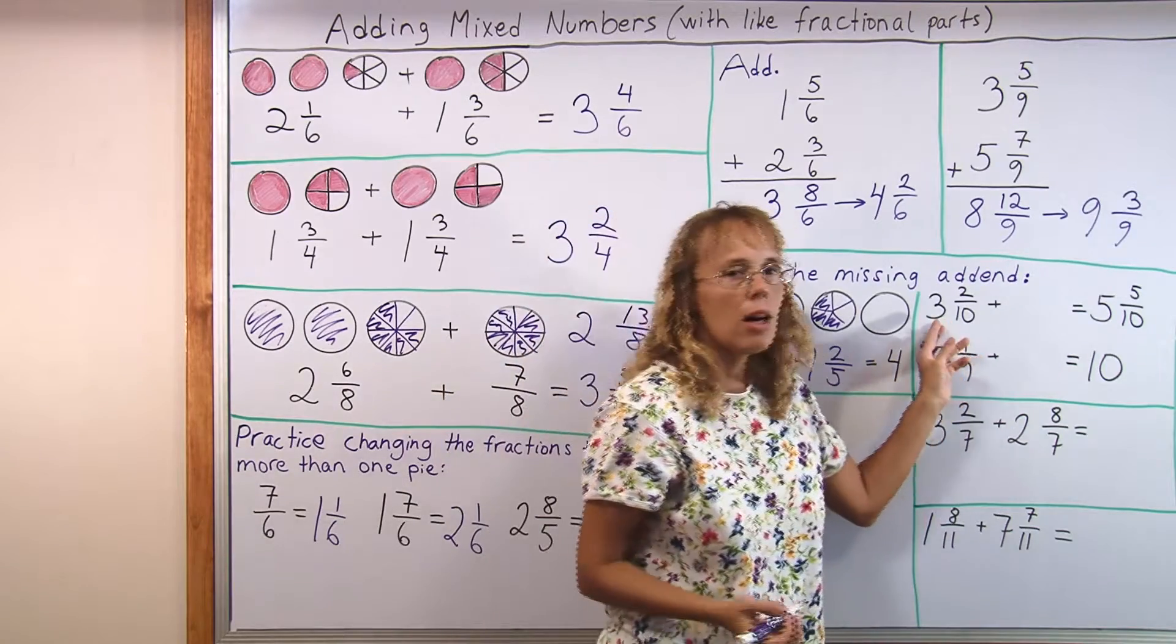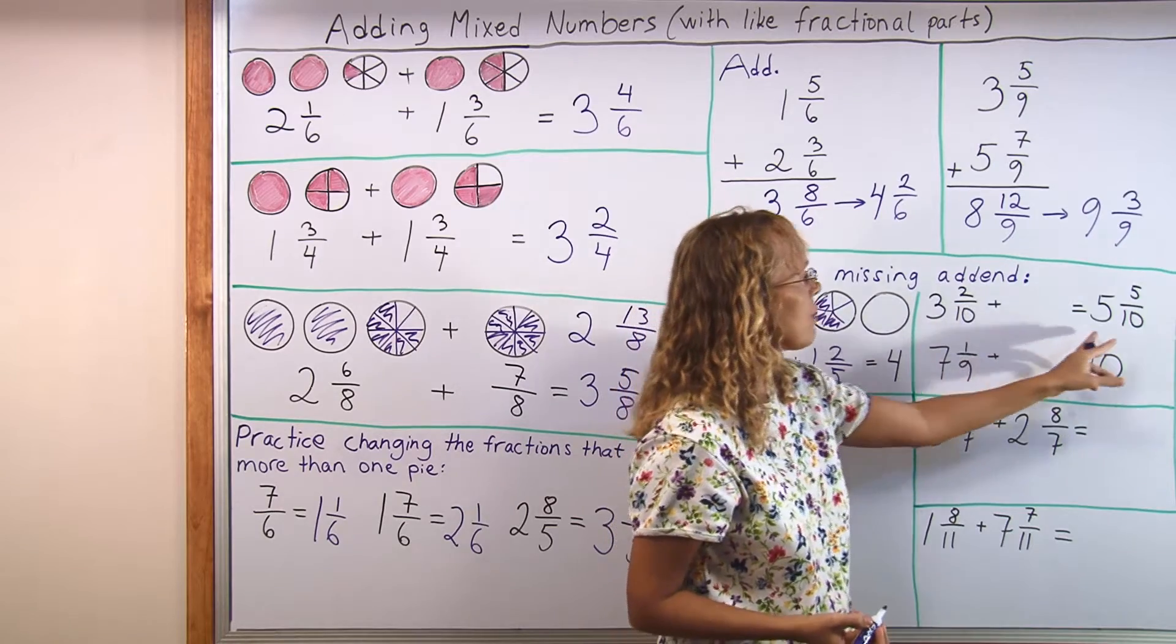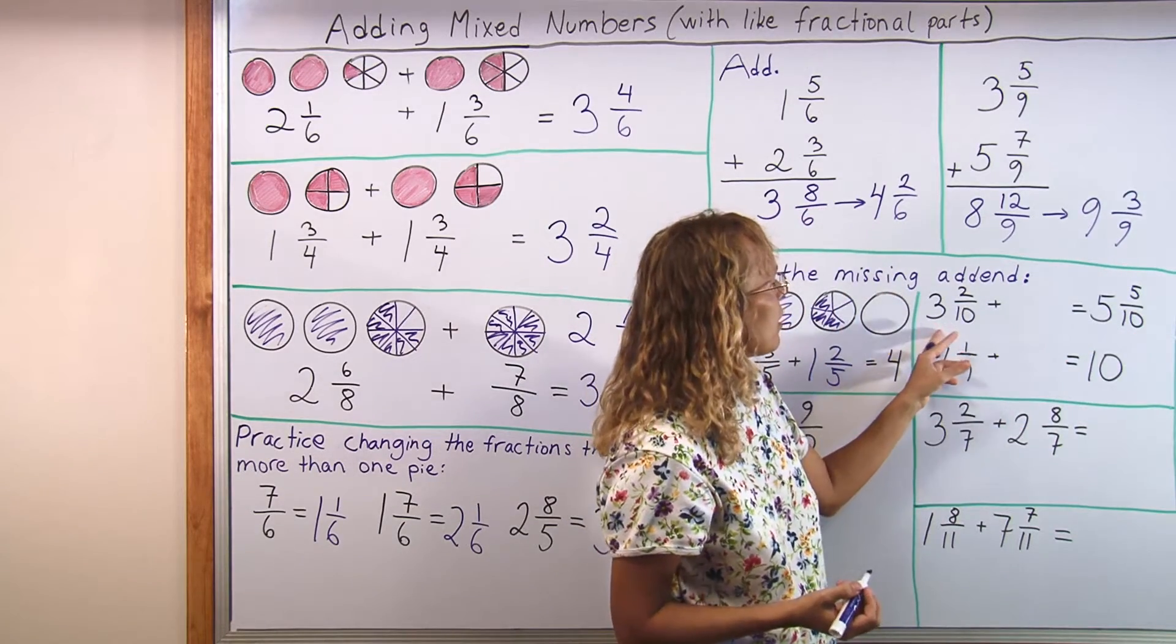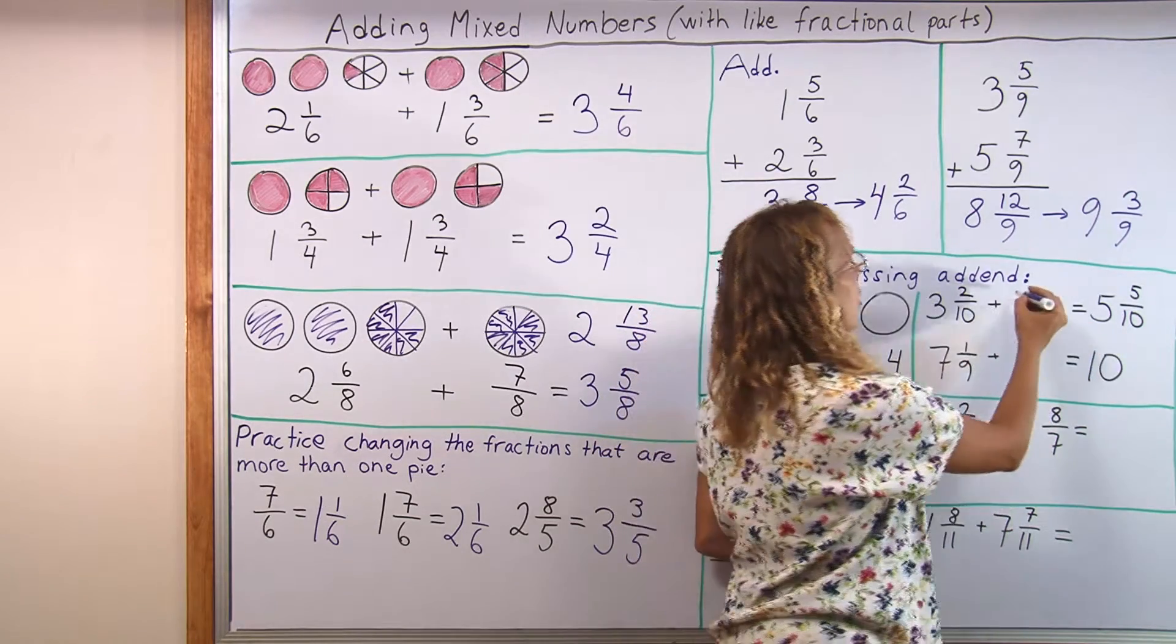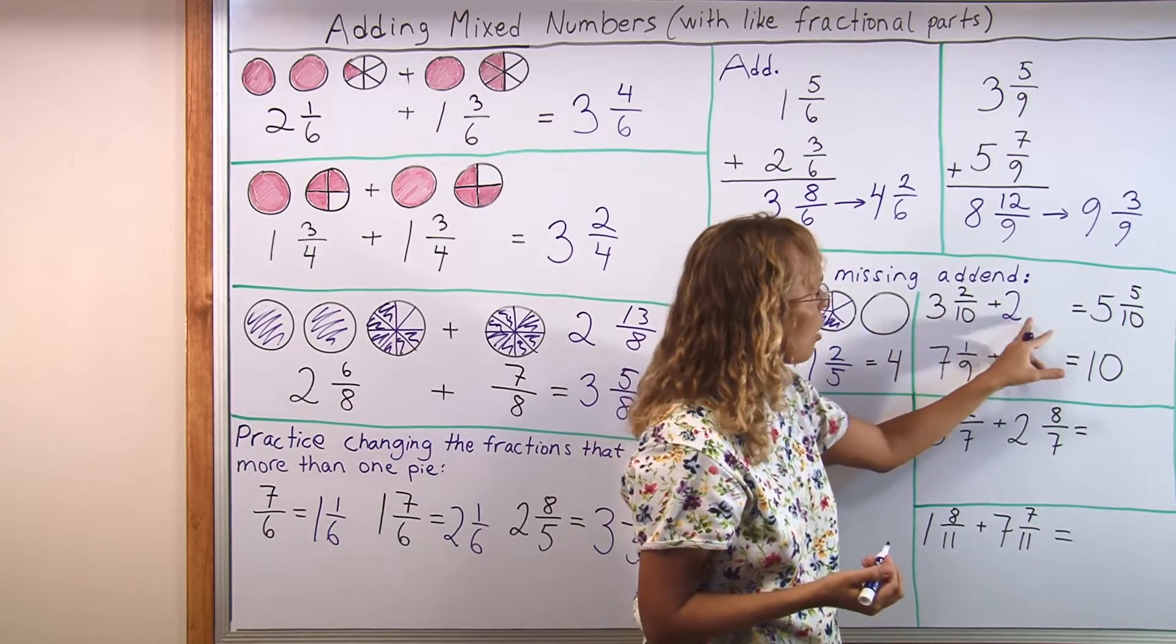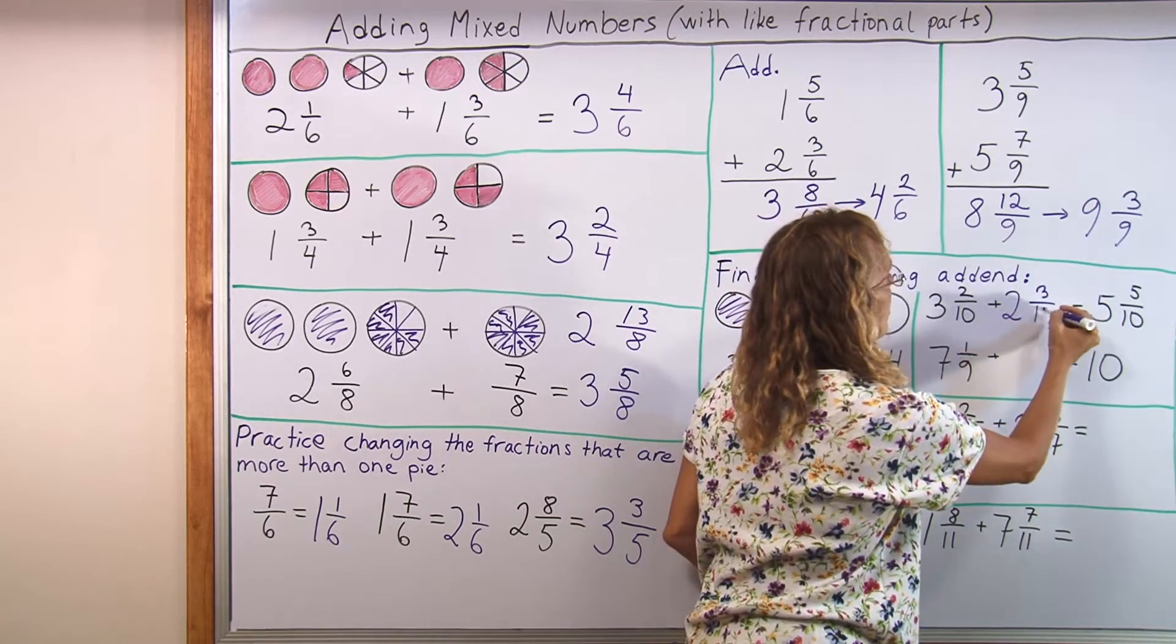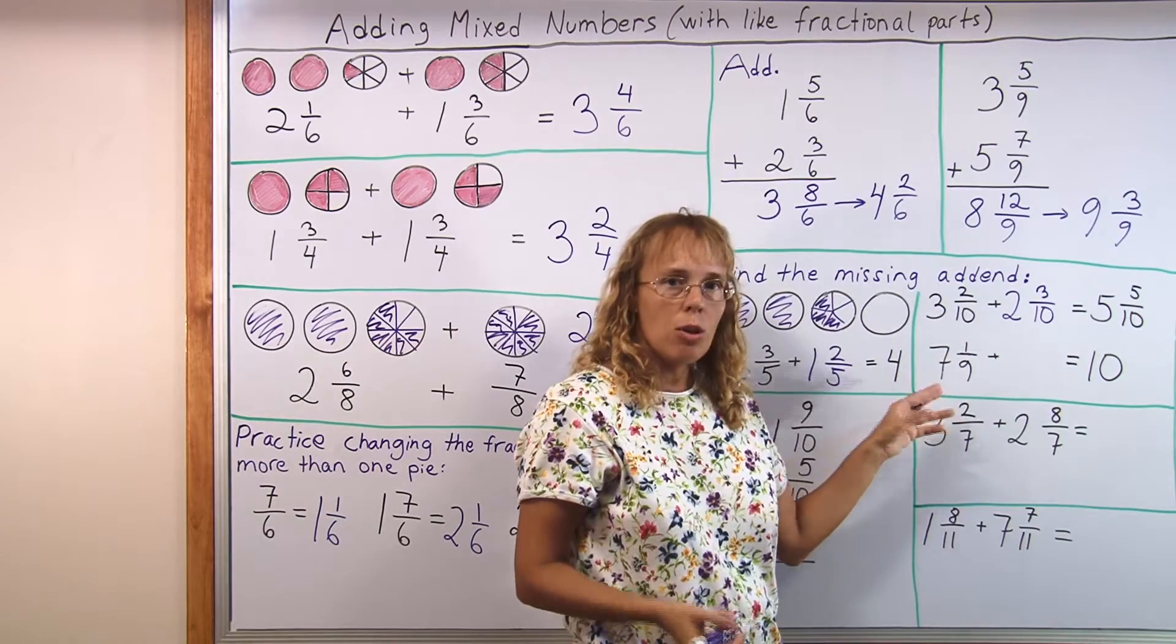Or they can practice the same without visual models. 3 and 2 tenths plus something makes 5 and 5 tenths. This is an easy problem because you can basically think, 3 plus what makes 5? It would be 2 whole numbers, 2 whole pies. And then 2 tenths plus how many makes 5 tenths? 2 tenths plus 3 tenths. This one works easily like that.